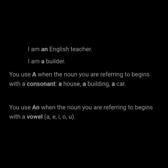You use A when the noun you are referring to begins with a consonant. For example: a house, a building, a car. You use AN when the noun begins with a vowel — A, E, I, O, U. Note that pronunciation changes this rule; it is the sound that matters, not the spelling.